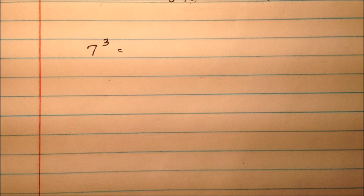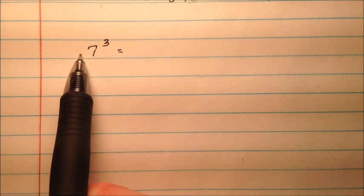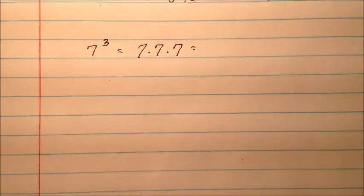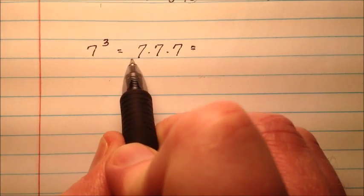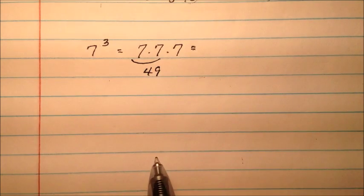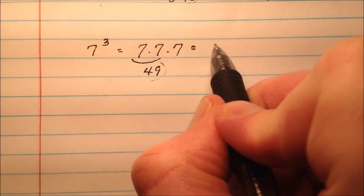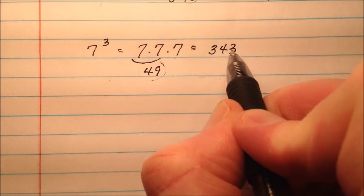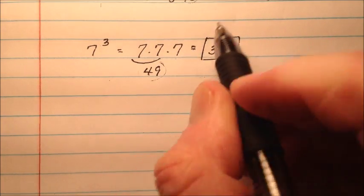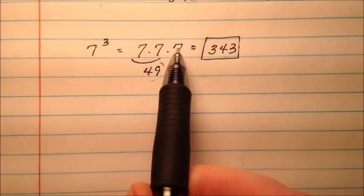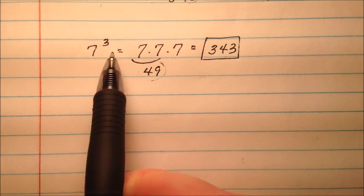In the next example, let's look at 7 cubed, or 7 to the power of 3. That means 7 is going to be multiplied by itself 3 times: 7 times 7 times 7. The first 7 times 7 is 49, and then 49 times 7 is going to be 343. You can work that multiplication out if you need to. So 7 cubed is 343 when we multiply 7 by itself 3 times.